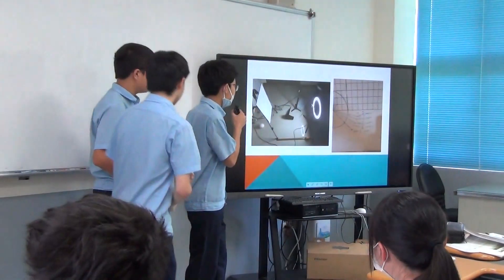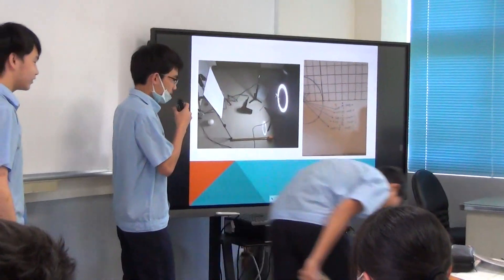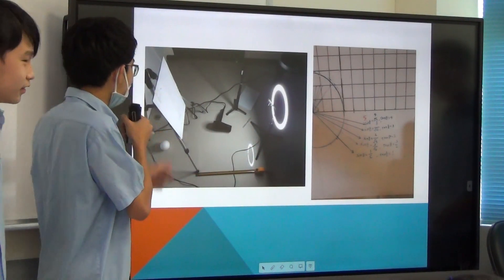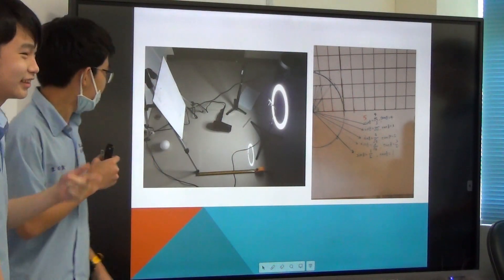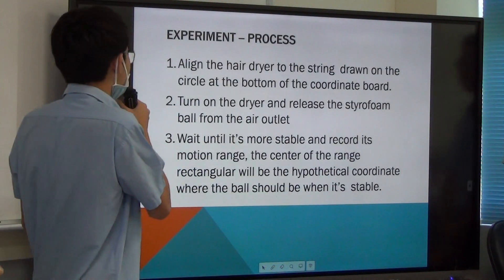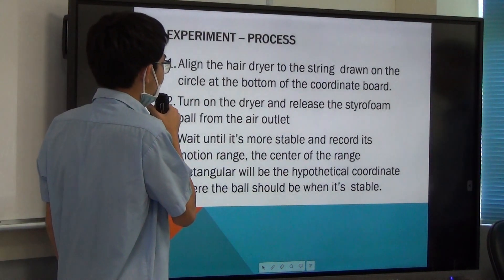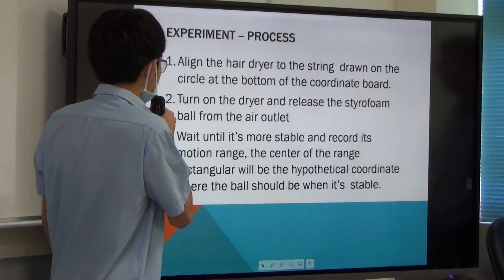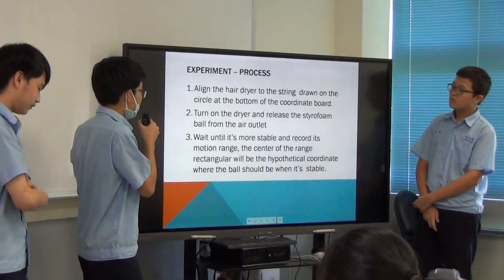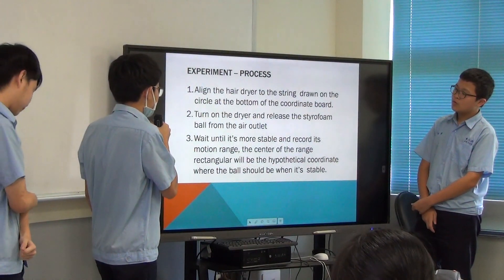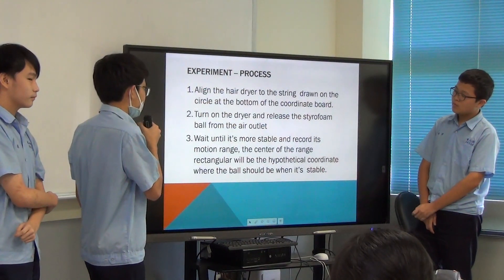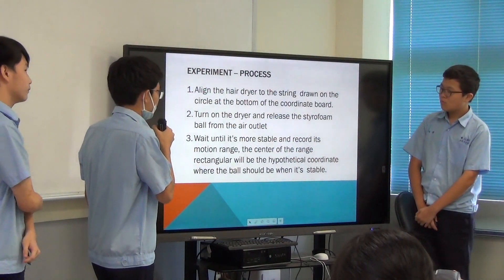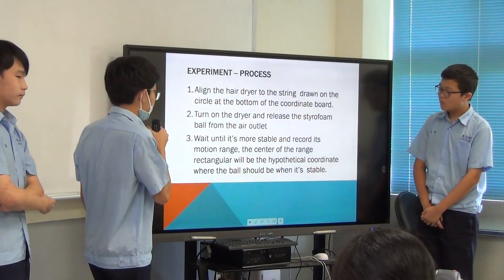This is the setup we used. We use an air dryer. This is the light and this is the board. We placed the air dryer to turn the circle at the bottom of the coordinate board, then turned on the dryer and released the styrofoam ball from the air outlet point until it became more stable, and recorded its motion range. The center of the range rectangle will be the hypothetical coordinate of where the ball should be when stable.